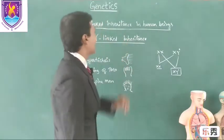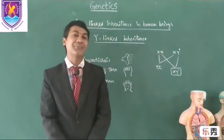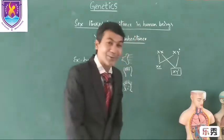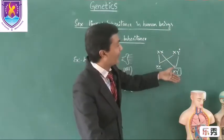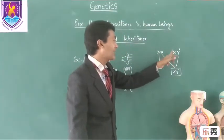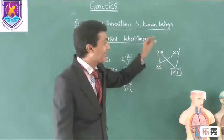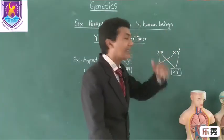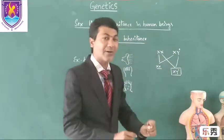Y-linked inheritance is the inheritance that takes place by the genes present on the Y chromosome. Since the Y chromosome is present only in males, the genes present on the Y chromosome will be transferred to sons, not to daughters. So this inheritance takes place from male to male — father to son. The father shares the X chromosome with his daughter, whereas he shares the Y chromosome with his son. So if there are disorders in Y chromosome genes, they will obviously be inherited by the sons of that particular affected father.